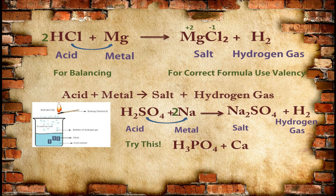Now try this equation by yourself. H₃PO₄, which is the formula of phosphoric acid, and Ca, which is the formula of calcium metal — when these two react, what will form? What will be the formula of the products? This you have to identify. To know the correct answer, watch the video till the end.